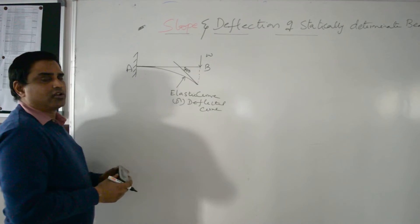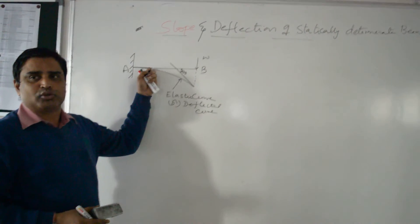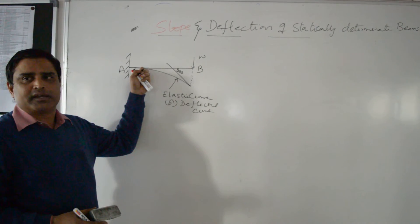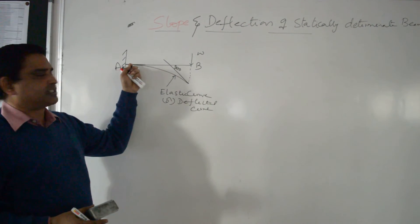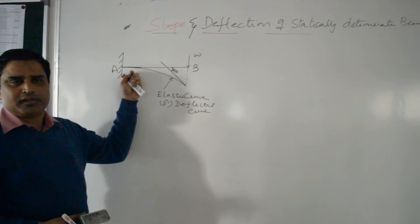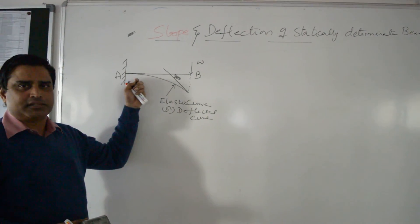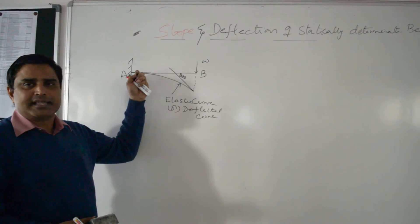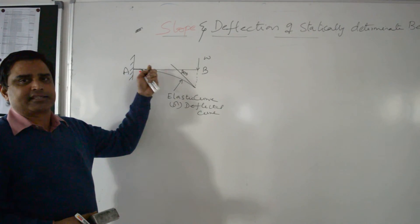The tangent drawn on the elastic curve at point A is parallel to the axis of the beam, so there is no slope at the fixed support. There is also no deflection at the fixed support because of its rigidity. Due to fixity, there is no deflection and no slope, since the tangent on the elastic curve is parallel to the axis of the beam.